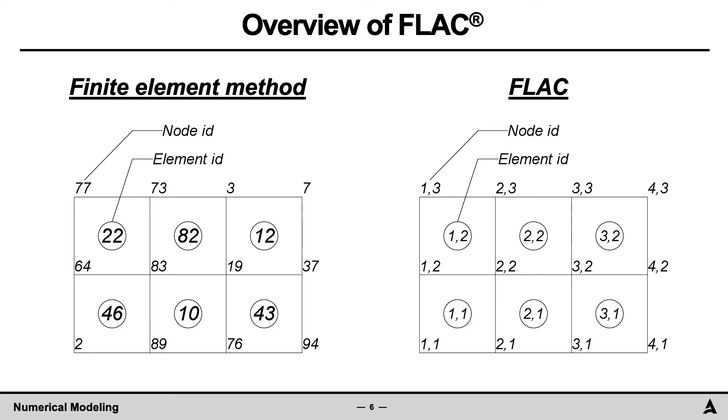In FLAC, nodes and zones are identified with two integers, representative of the row and column in the grid. The variable i is used to refer to the row number, whereas j is used to refer to the column number. In FLAC, the zones are identified as 1,1, 2,1, 3,1, 1,2, 2,2, and 3,2. The node numbering also follows the row and column format. For a particular zone, for example 2,2, the associated nodes are 2,2, 3,2, 3,3, and 2,3.